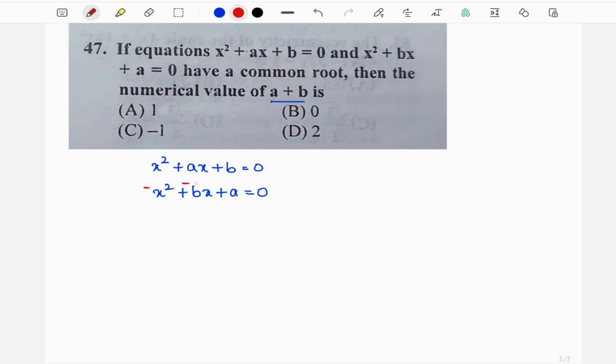I will subtract the second one so we need to change the signs before subtracting. Now x² and minus x² gets cancelled, this is ax minus bx. Here we have b minus a, this is equal to 0.